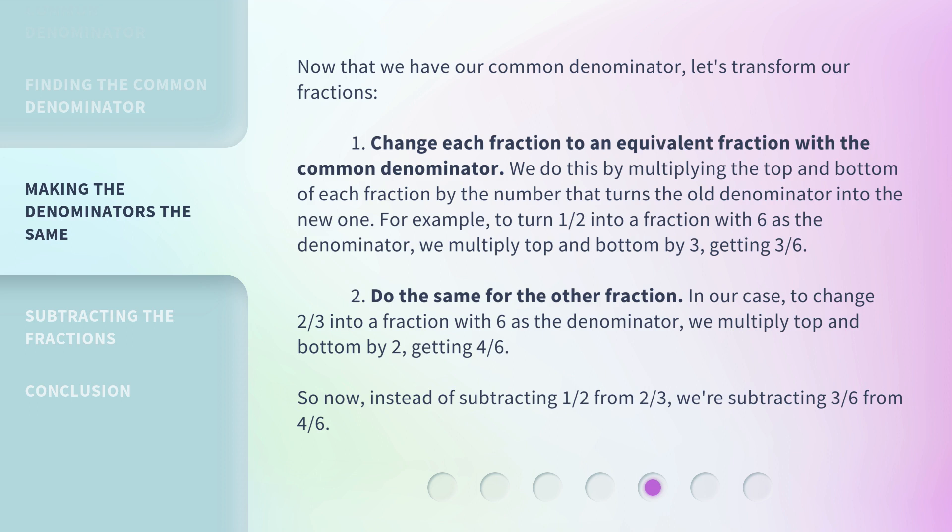2. Do the same for the other fraction. In our case, to change 2 thirds into a fraction with 6 as the denominator, we multiply top and bottom by 2, getting 4 sixths. So now, instead of subtracting 1 half from 2 thirds, we're subtracting 3 sixths from 4 sixths.